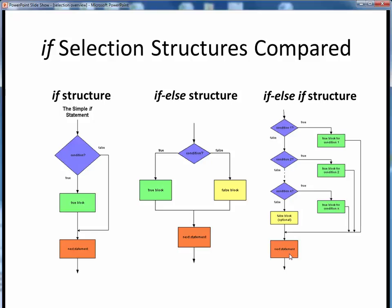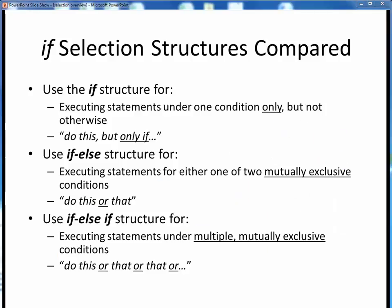This if-else-if structure is a more general form of the if-else structure, and reduces to it if we have only one of these conditions present. Depending upon the particular logical situation we're trying to implement in our code, we might choose a different one of the three if-selection structures to use.